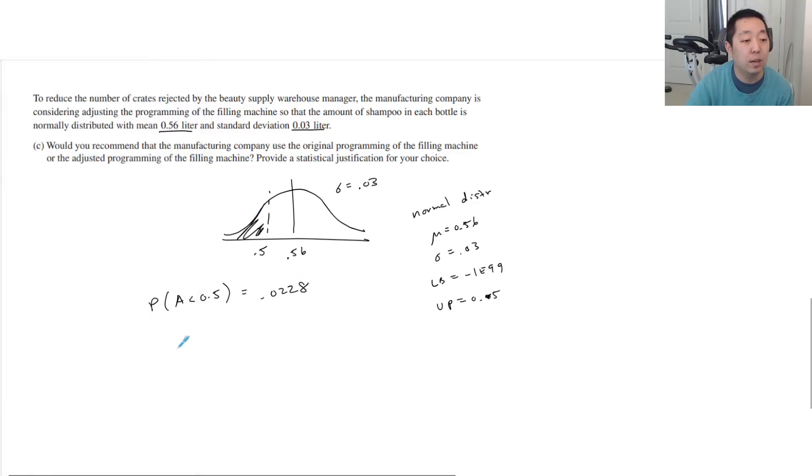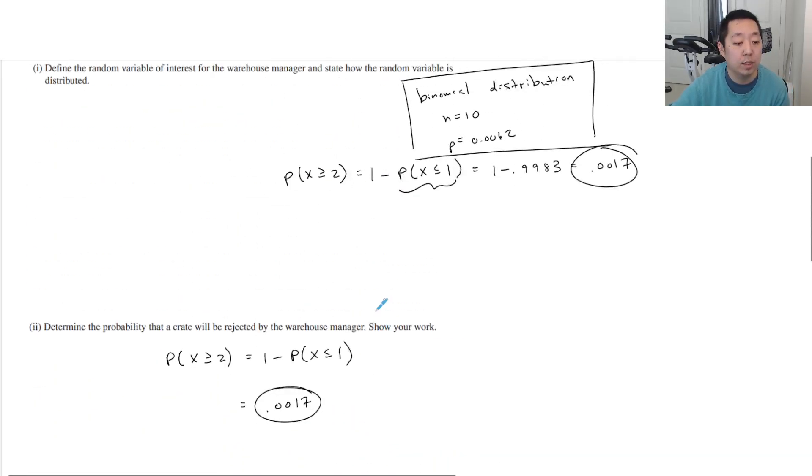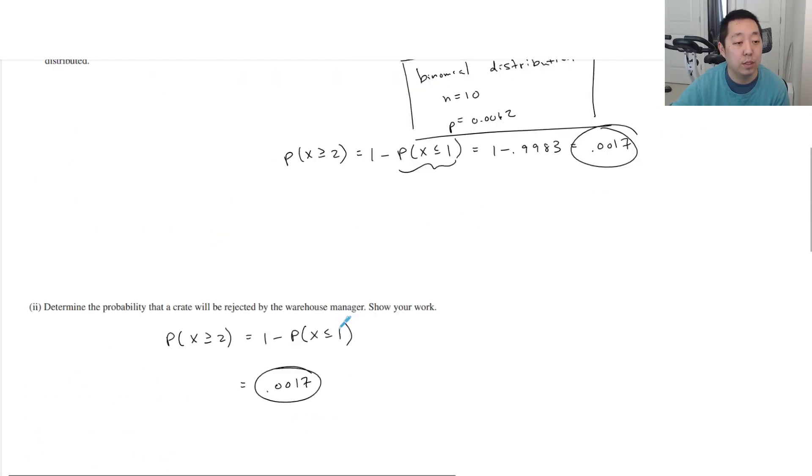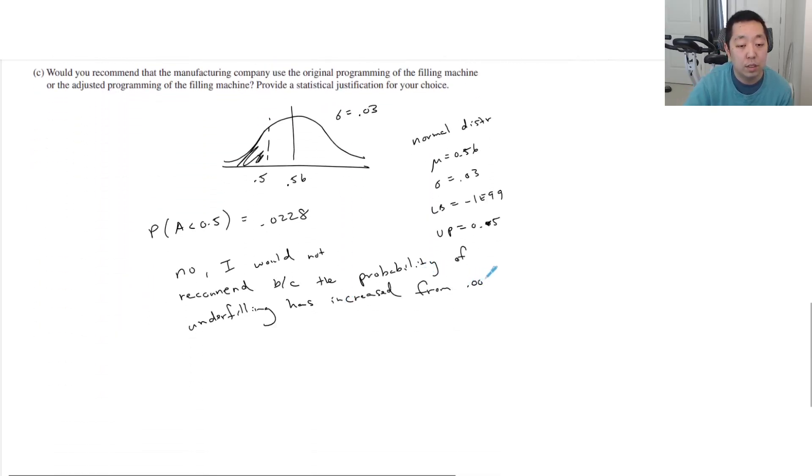And I would say no, I would not recommend it because the probability of underfilling has increased from... and I would put the numbers you're comparing because they want you to be specific: 0.0062 to 0.0228.